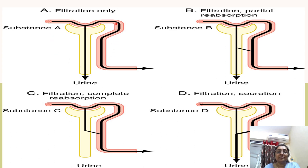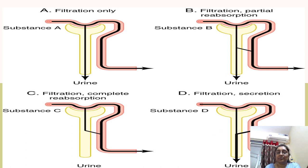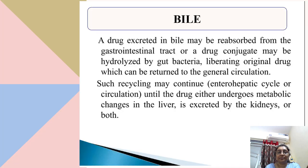These are the various mechanisms of drug excretion: In the first picture, filtration only — drug filters from glomeruli and is excreted. In the second, filtration with partial reabsorption — drug filters and partially re-enters circulation. In the third, filtration with complete reabsorption. In the fourth, filtration and secretion — first filtration at the glomerulus, then some drug is also secreted into the tubule.